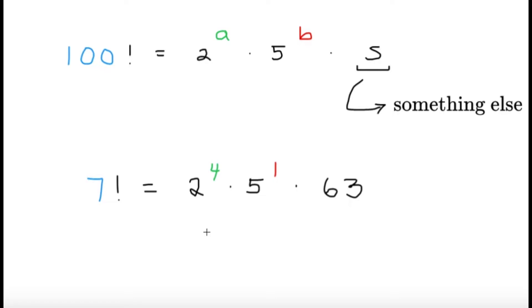And we can make the observation here that, generally, a is going to be greater than b, simply because there are more multiples of 2 than multiples of 5 less than a certain number. So, for example, 7 over here. Obviously, there are more multiples of 2 than multiples of 5 that are less than or equal to 7. So, generally speaking, we're going to have a greater than b.